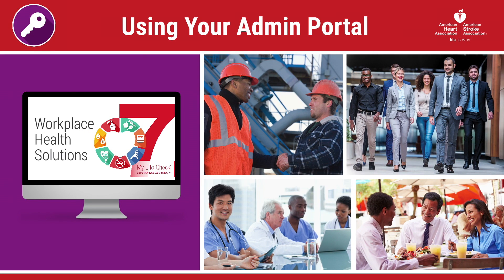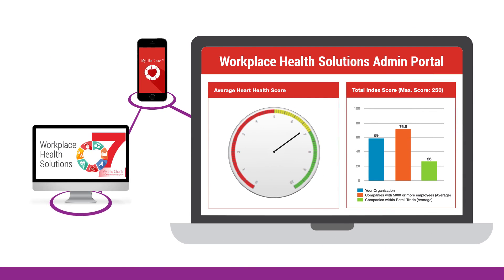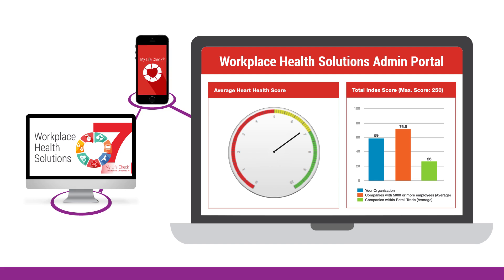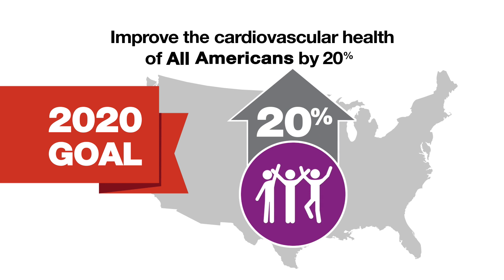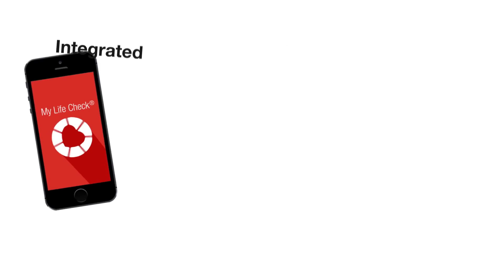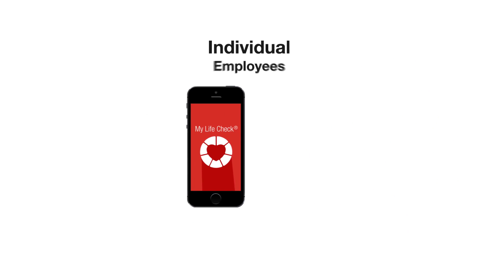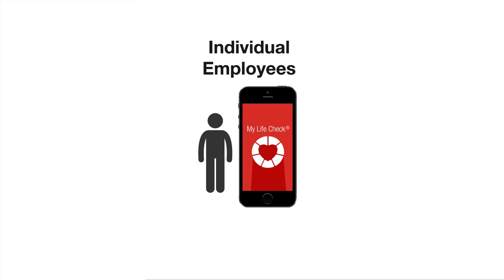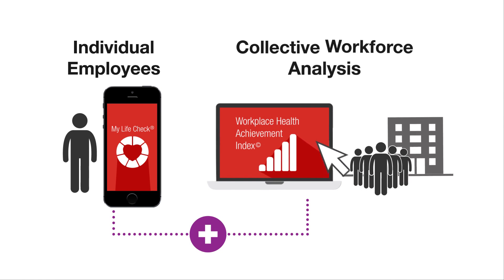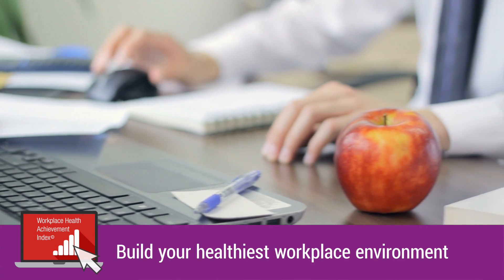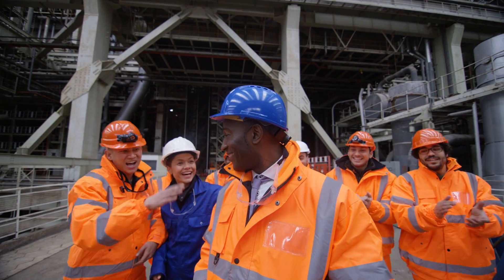Once you've created your Workplace Health Solutions account, you may sign in and start making the most out of your Workplace Health Solutions admin portal. The admin portal provides useful tools for monitoring progress toward building a healthier workplace and workforce. The Workplace Health Solutions tools integrate two platforms to help workforces track key health improvements: My Life Check, which offers confidential scoring, feedback, and improvement strategies for individual employees, and the Workplace Health Achievement Index, which is an organizational self-assessment. Both of these platforms help you improve practices to build your healthiest workplace environment.